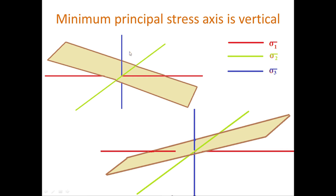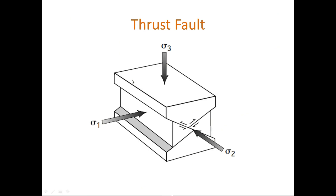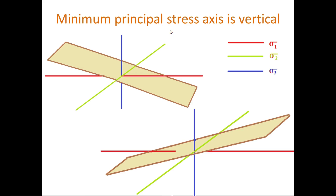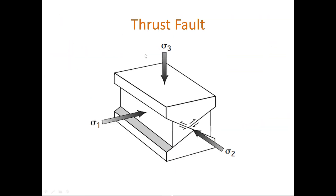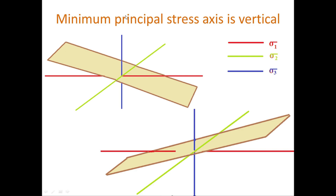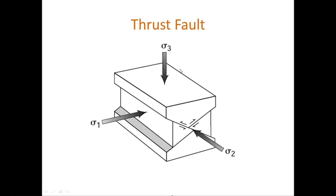In this condition in which the minimum principal stress axis is vertical, the fault plane makes a very low angle with respect to the surface, and its sense of motion is horizontal. In this condition, what we actually encounter is a thrust fault. As we can see in the diagram, sigma three is vertical, which causes generation of a thrust fault — it is a reverse fault. The reverse fault or thrust fault is developed when the minimum principal stress axis is vertical, and this is associated with crustal shortening.